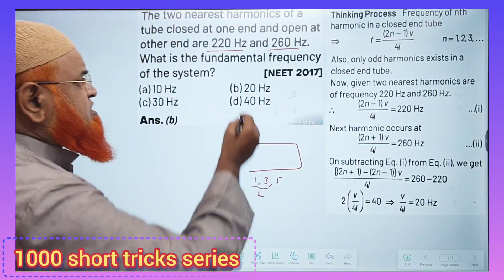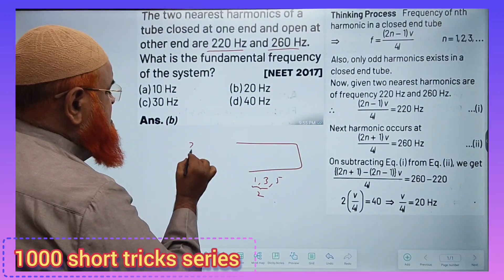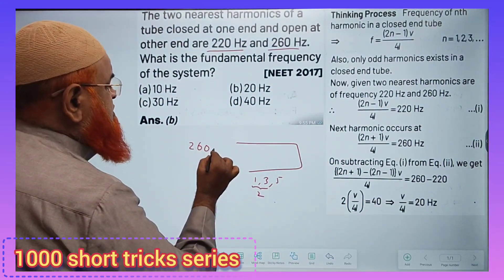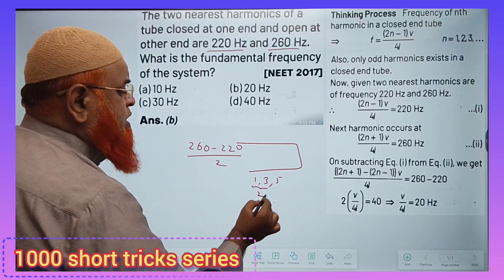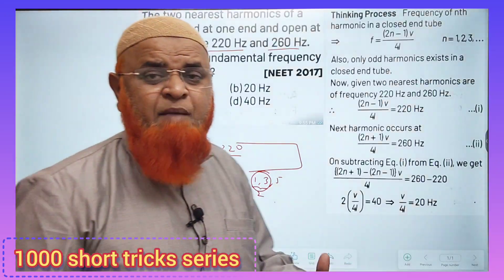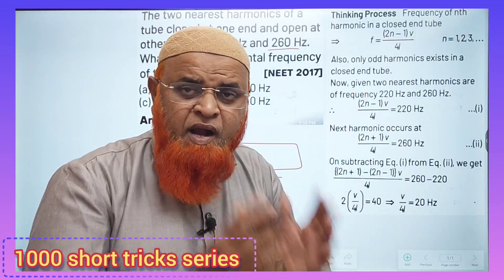Whatever frequencies are given, just take the difference: 260 minus 220, divided by 2. Why? Because between successive frequencies there is a gap of 2. If you divide by 2, you get 40 divided by 2.